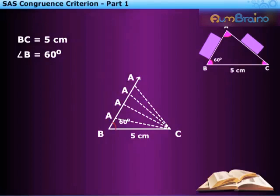This means we cannot draw a copy of a triangle if the length of only one side and one angle are given. So we need to know one more measure, say AB.